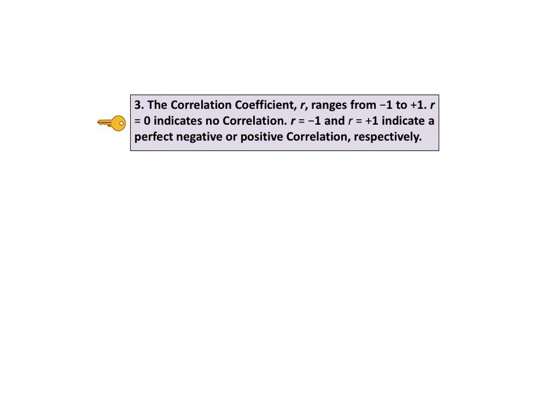r equals negative 1 indicates a perfect negative correlation. And r equals plus 1 indicates a perfect positive correlation.